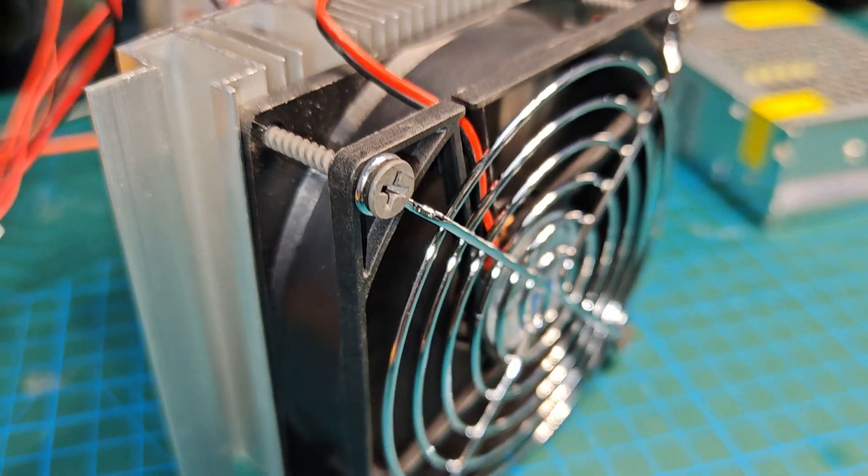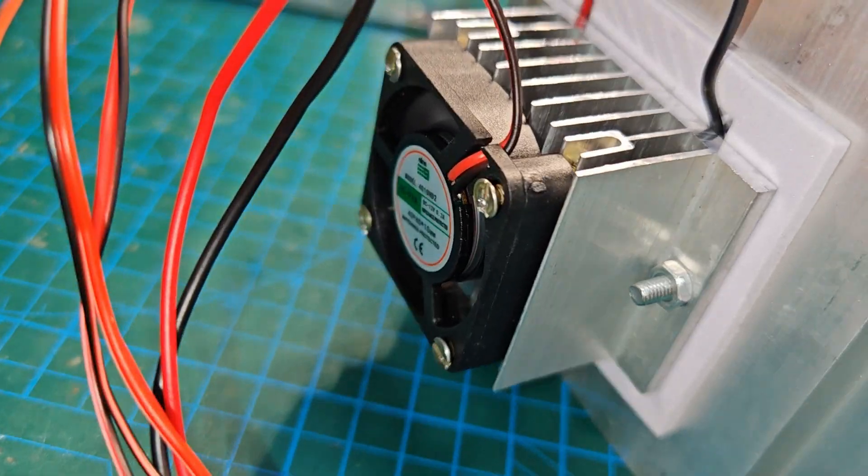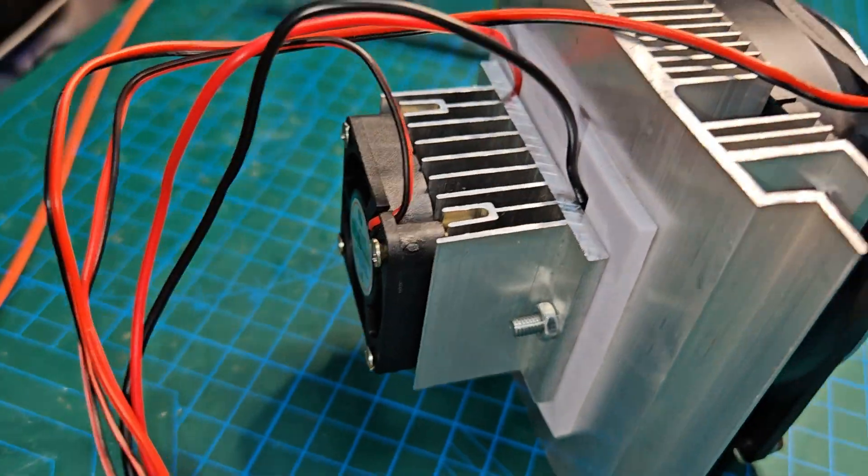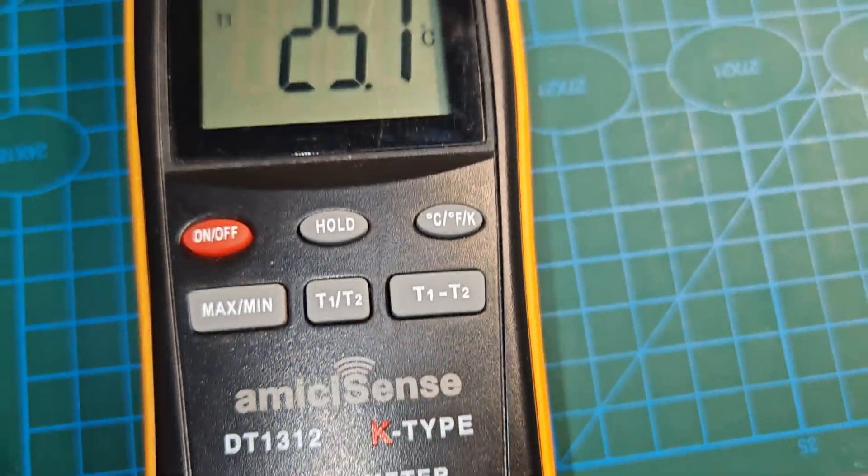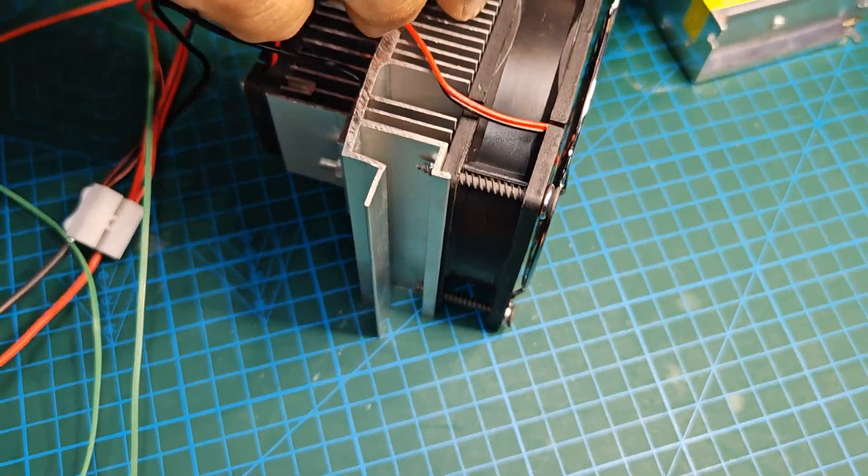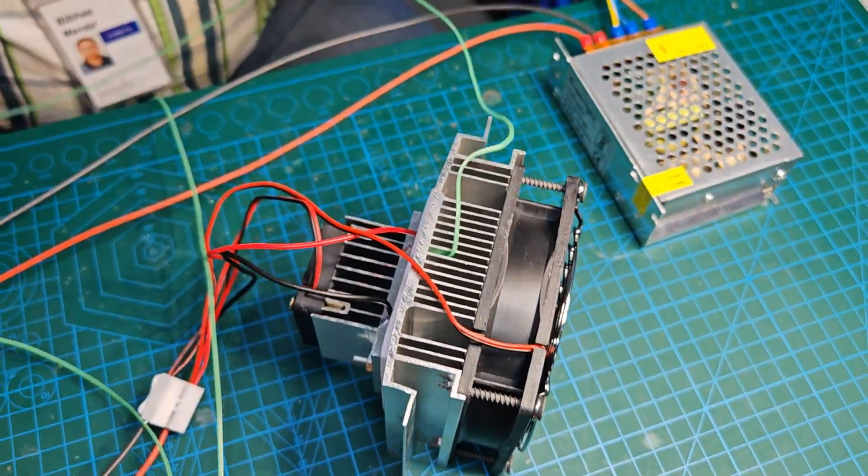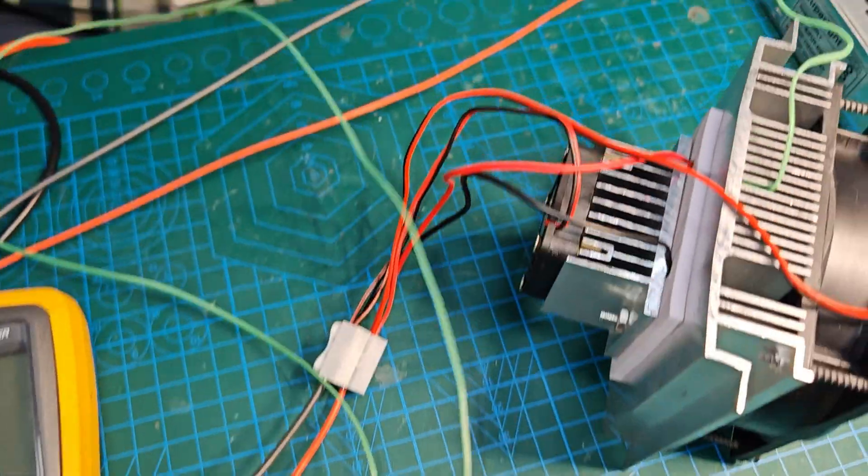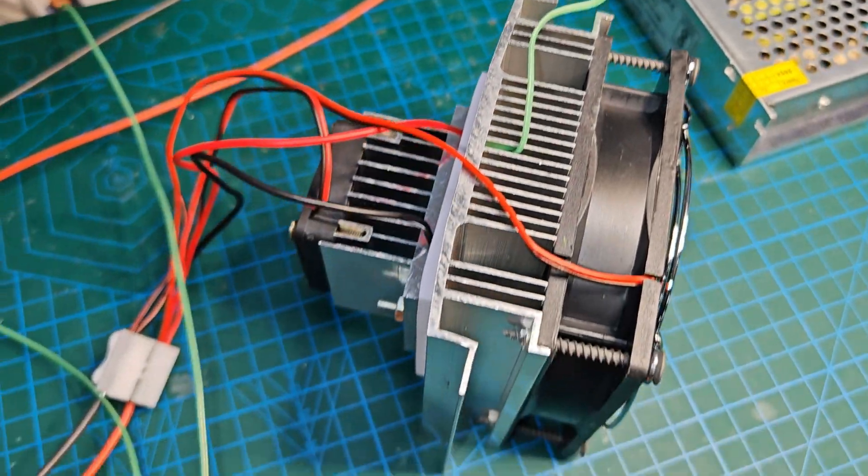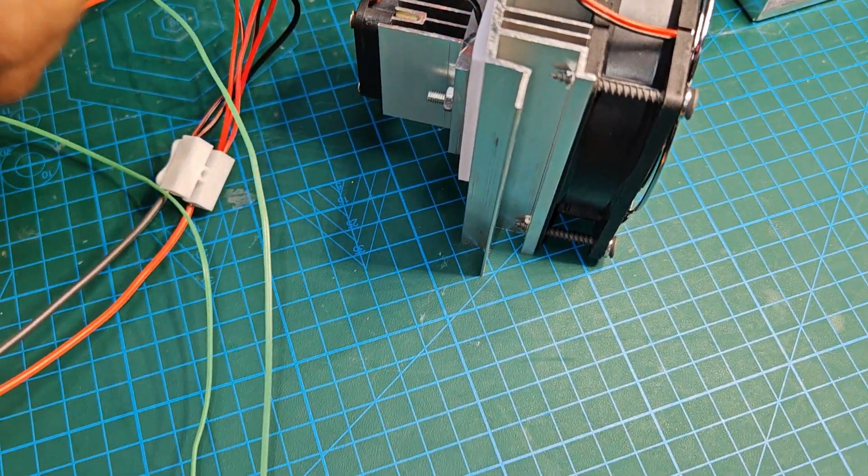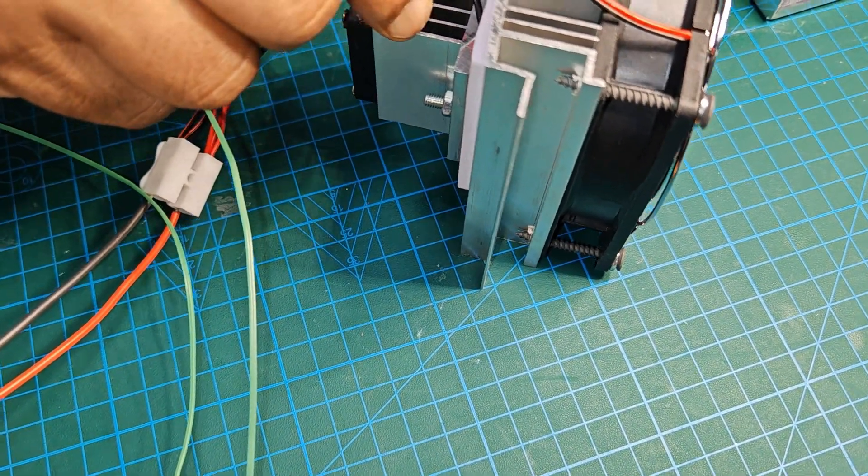My dear friends, we have got a temperature thermometer which will measure the temperature. We will place one temperature sensor at the one heat sink which is going to release the heat, and other temperature sensor which is going to release the cool air. Let us see what is the temperature difference.